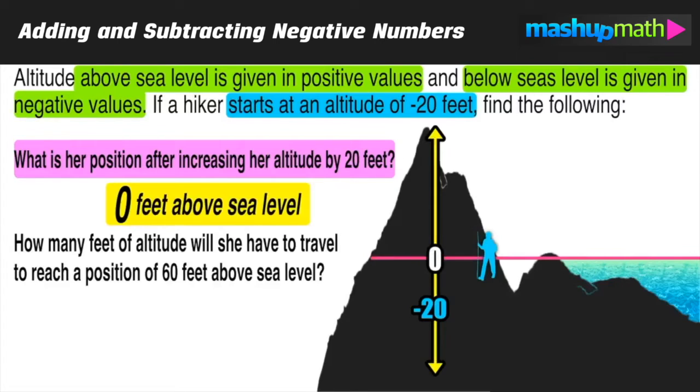And scenarios like this should help us to understand that negative 20 plus 20 is equal to zero, so it just brings you back to where you started.